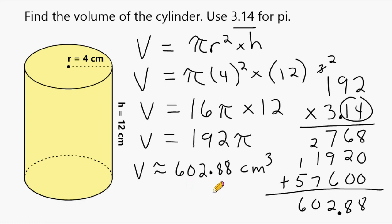So if we were to round this to the nearest whole number, this is about 603 cubic centimeters. To the nearest tenth would be 602 and 9 tenths. But I'm just going to leave this as 602 and 88 hundredths cubic centimeters.